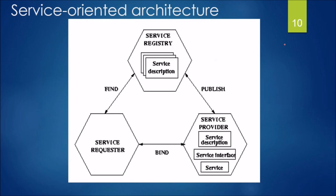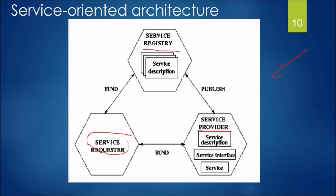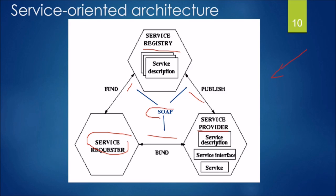Looking at the diagram: we have the service requester, the service registry, and the service provider. The communication between these three — find, publish, and bind — is carried out through SOAP, the Simple Object Access Protocol. All these arrows represent communication lines made possible through SOAP. WSDL lies at the service provider side, describing the service interface.